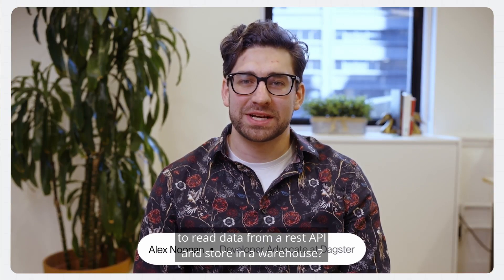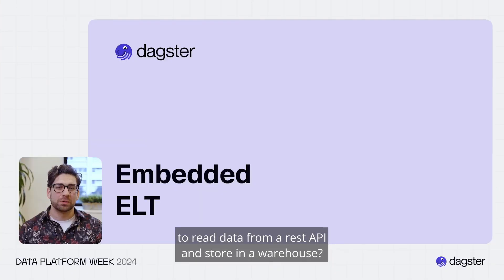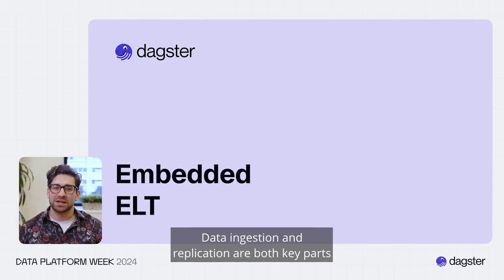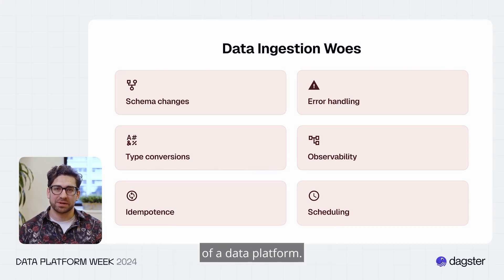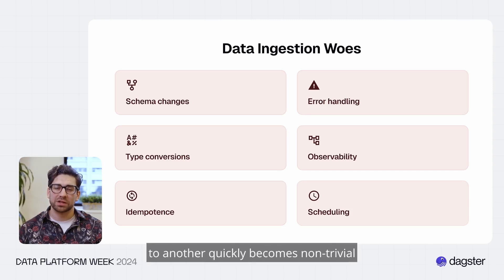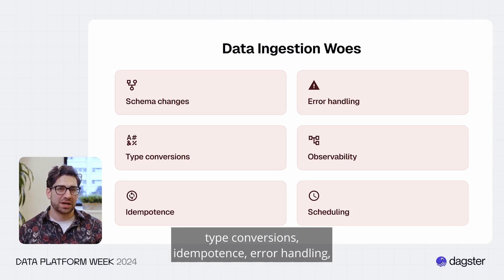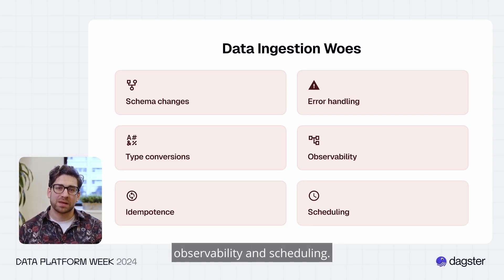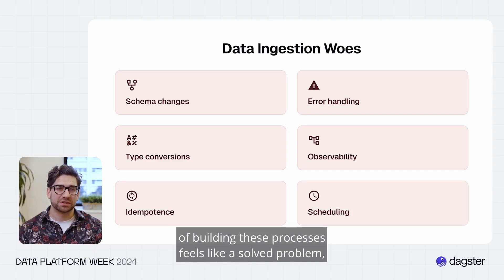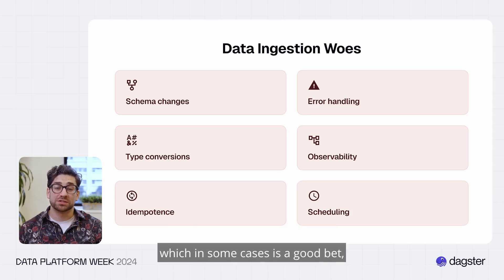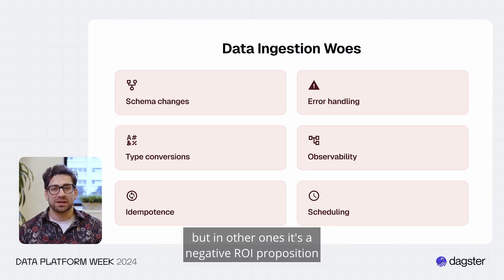How often have you written code to read data from a REST API and store it in a warehouse? What about replicating tables in a Postgres database, or loading reports from an FTP server? Data ingestion and replication are both key parts of a data platform. However, this seemingly simple task of moving data from one system to another quickly becomes non-trivial when you need to account for schema changes, type conversions, idempotence, error handling, observability, and scheduling. If going through the motions of building these processes feels like a solved problem, that's because it is.